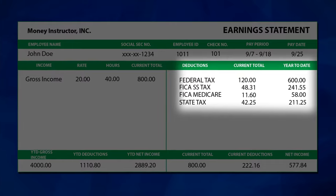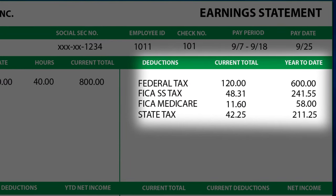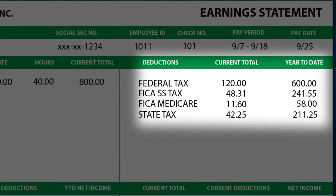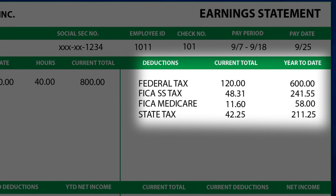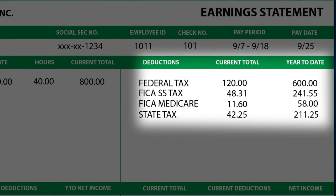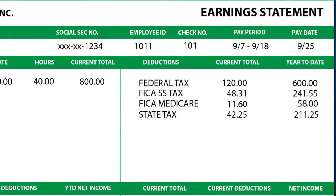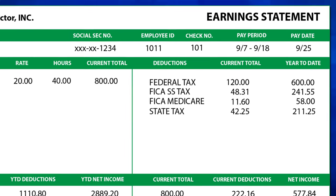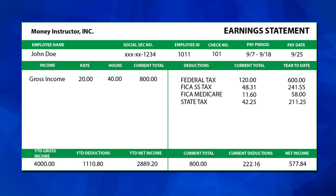Federal income tax, Medicare, and Social Security are the three main types of federal taxes withheld from your pay. Many states also withhold their own taxes. You may also have other employee deductions — this sample pay stub does not contain any employee deductions, though you may have some. Employees have the option to withhold contributions for retirement funds, health savings accounts, and other benefits.